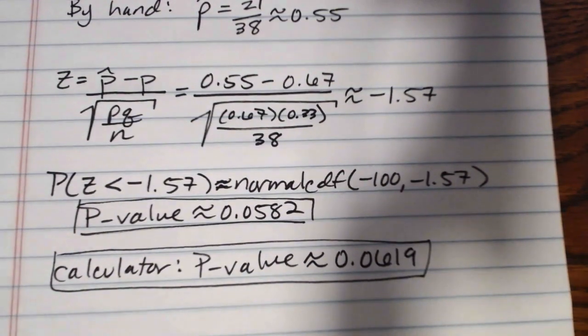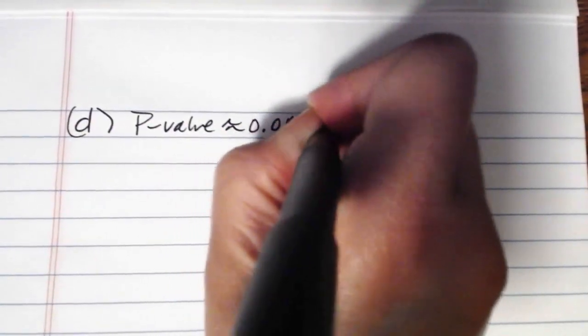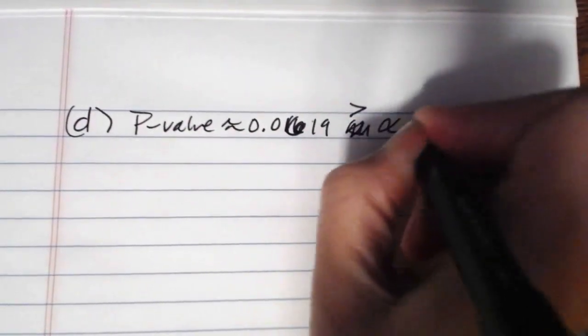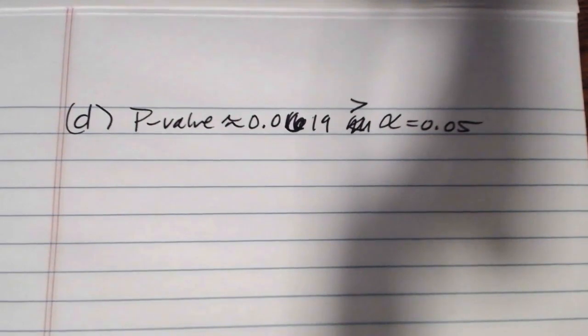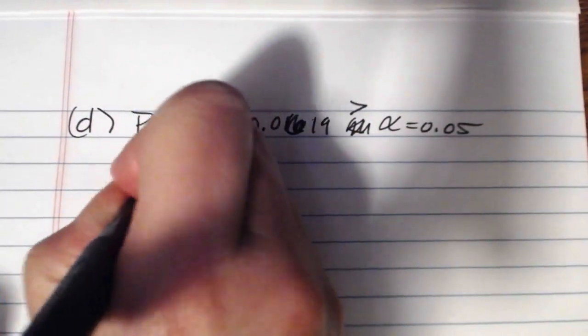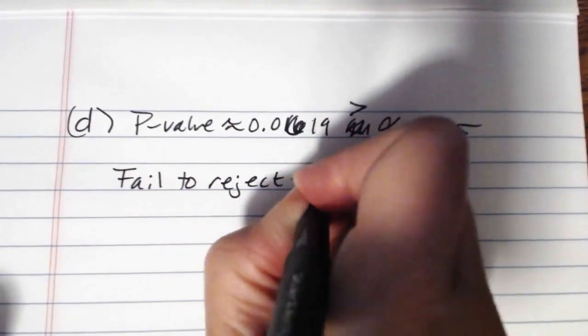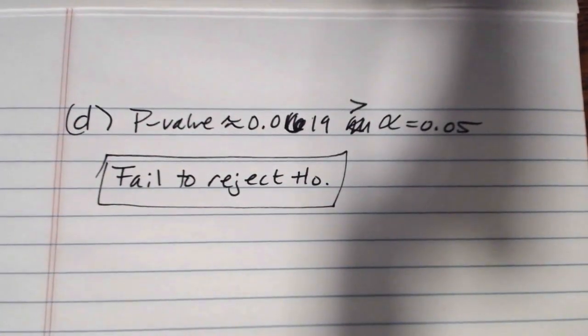In part D, we want to compare our P value to our alpha level to determine what we do with the null hypothesis. Our P value was .0619, which is greater than our alpha level of .05. .06 is about 6%. We were looking at a 5% level of significance. It's greater than. And since our mnemonic device is if the P is low, the HO must go, here our P value is not low. So we fail to reject the null hypothesis. Doesn't mean that it's conclusively been proven true. It just means we don't have enough evidence to show that it's not true.